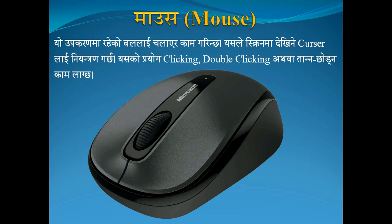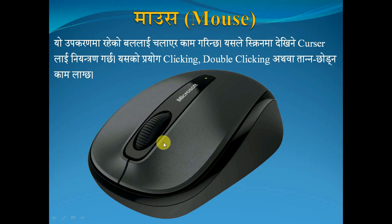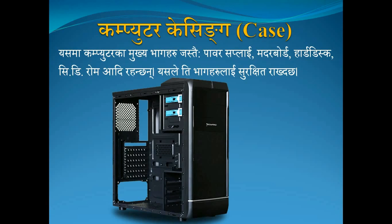One type of mouse uses a light bulb — this is the optical mouse. It changed from the older ball-type mouse. The ball mouse had a ball on the bottom that rolled on the table, while the optical mouse uses light.